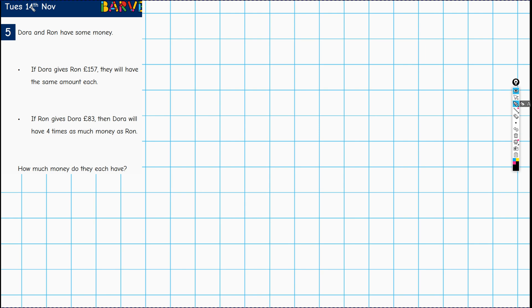A Barvember level five question here. Dora and Ron have some money. If Dora gives Ron £157, they will have the same amount each. If Ron gives Dora £83, then Dora will have four times as much money as Ron. We're asked how much money do they each have?